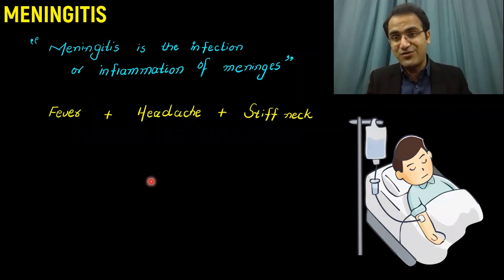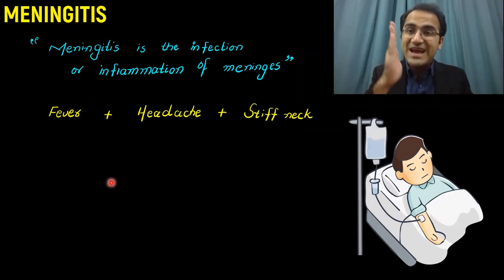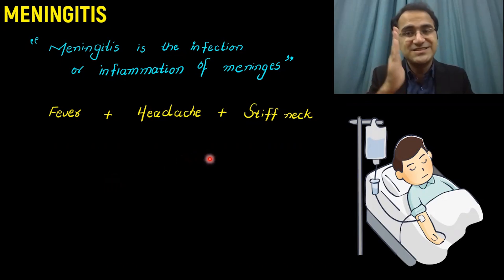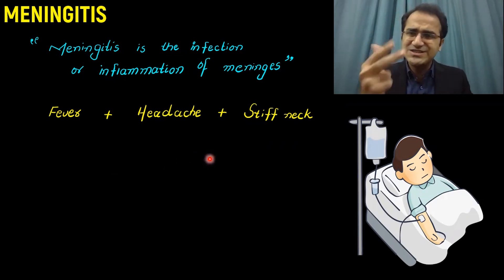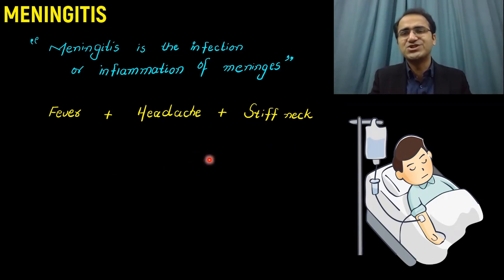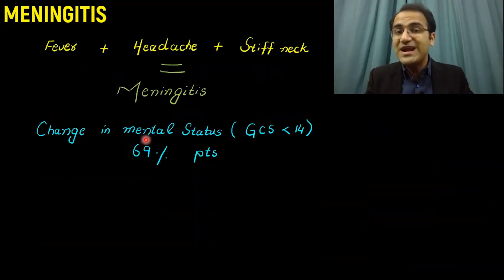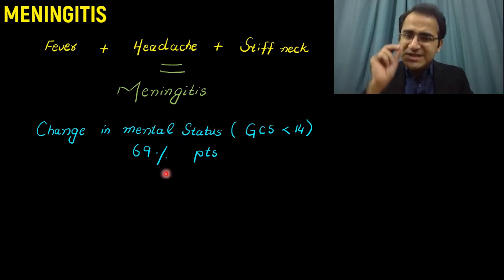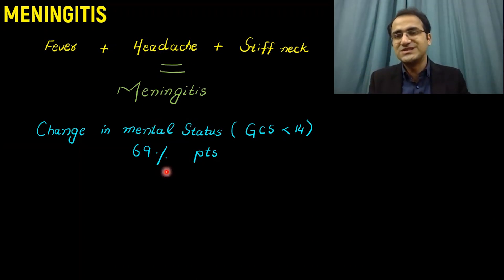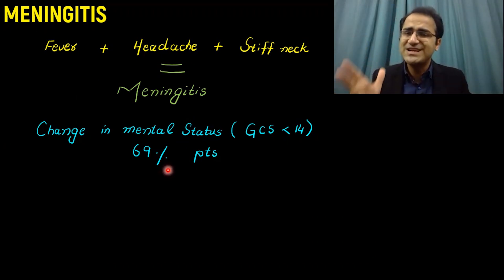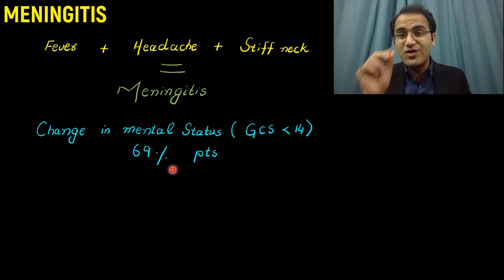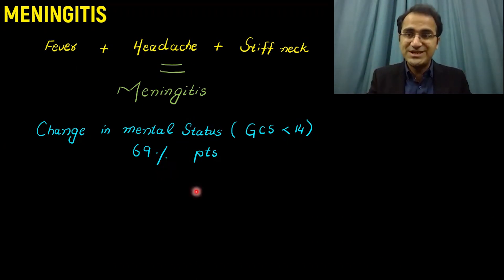What is the presentation of meningitis? Meningitis patients present with fever, headache, and stiff neck — this is the classical presentation. Additionally, 69% of patients will have a change in their mental status. When you check the Glasgow Coma Scale, their score would be less than 14. This is a very important finding in meningitis.